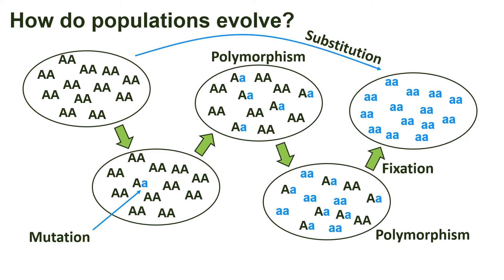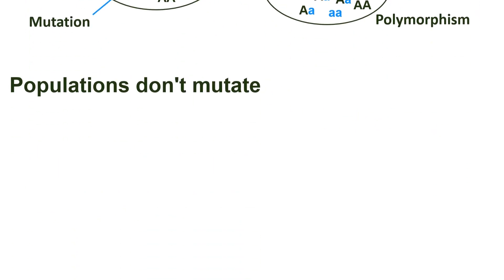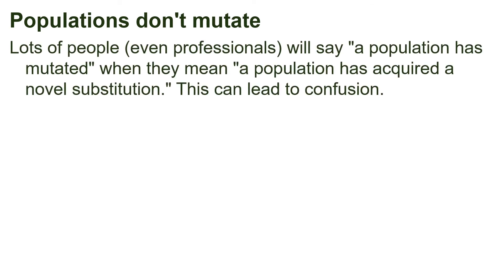It's best to use the word substitution because it reminds us of the entire process that has occurred. Just using the word mutate has real potential to cause us to misunderstand how evolution works. Populations don't mutate — only individuals do. Unfortunately, lots of people, even professionals, will say that a population has mutated when they really mean that a population has acquired a novel substitution.